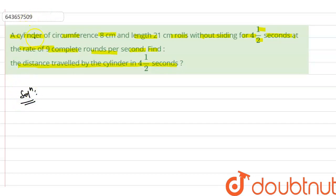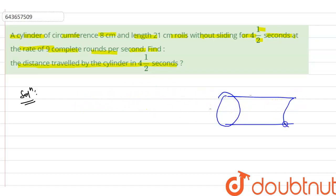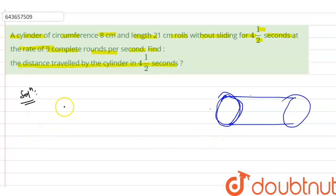As it is given that a cylinder of circumference 8 centimeter — what is the value of circumference? We have a cylinder like this. This is our cylinder, and the circumference is 8 centimeter. Circumference is totally like a circle. So circumference equals 2πR and it is 8 centimeter. The length is 21 centimeter.